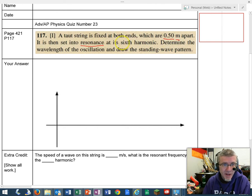One way to think about resonance. And we're doing the sixth harmonic. Determine the wavelength of the oscillation and draw the standing wave pattern.